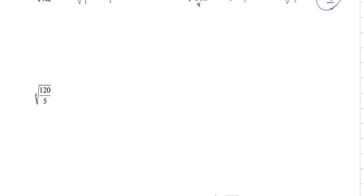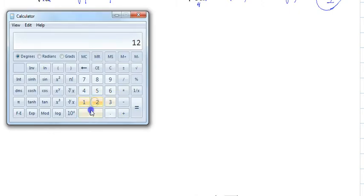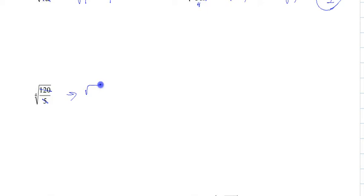Alright, what if you have a fourth root? Well, it's the same thing. We reduce our fraction first. So 5 goes into 120, 24 times. So we get square root of 24, sorry, fourth root of 24 over the fourth root of 1, and that's always 1. So you really don't have to put the 1.